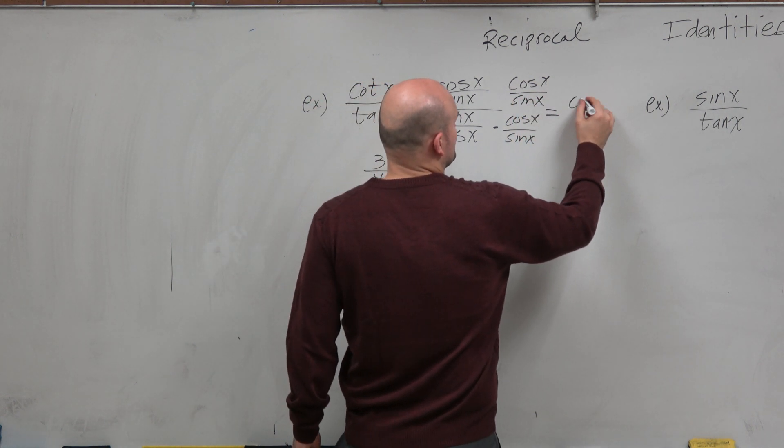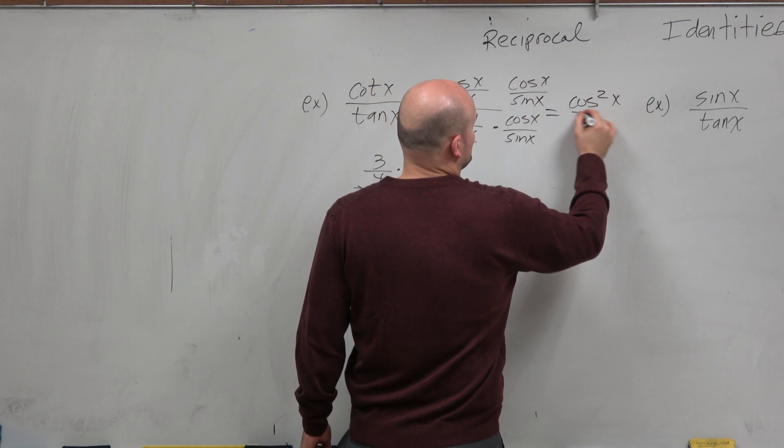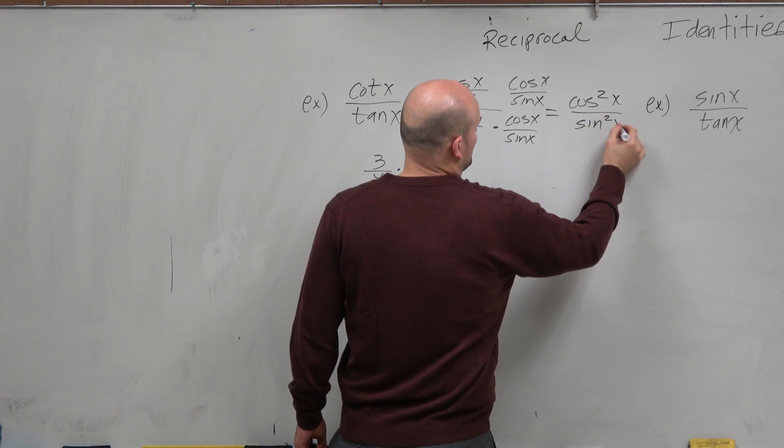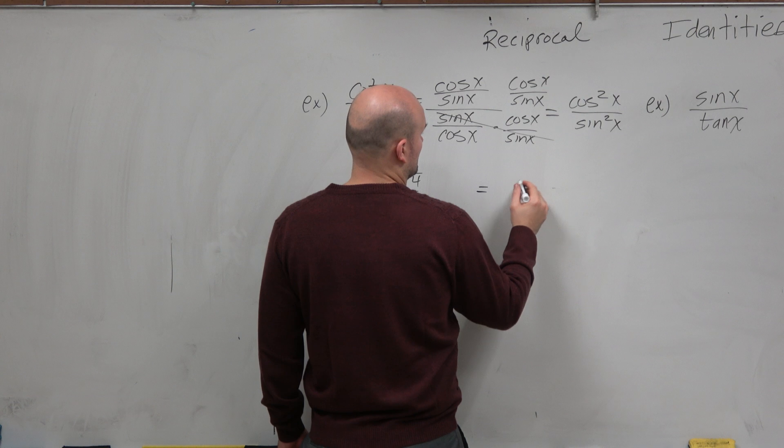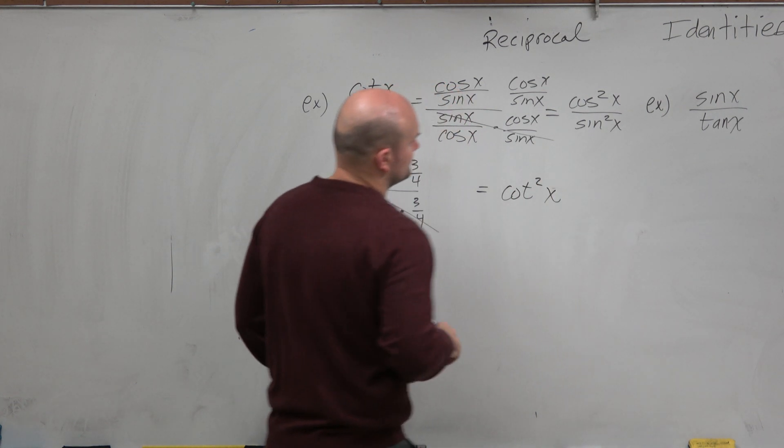Right? So then what you get is cosine squared of x divided by sine squared of x, which is equal to cotangent squared of x.